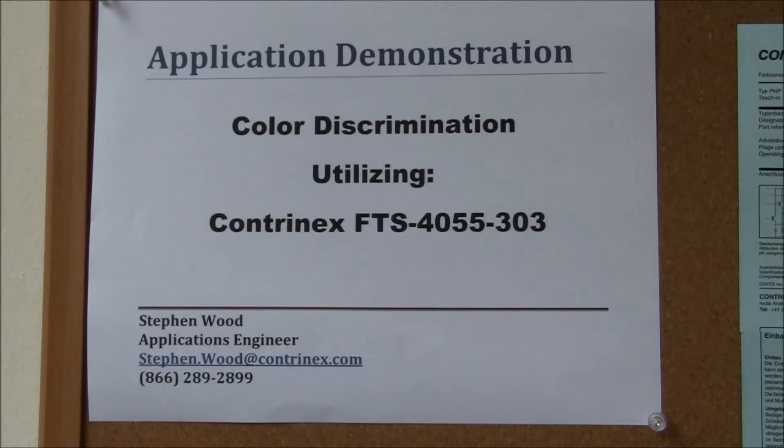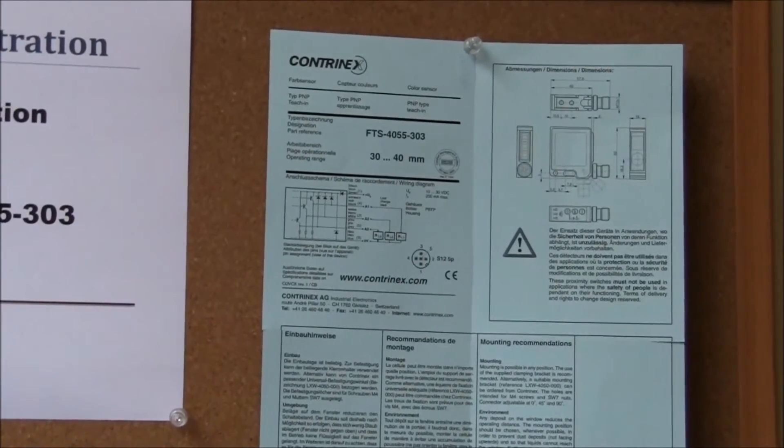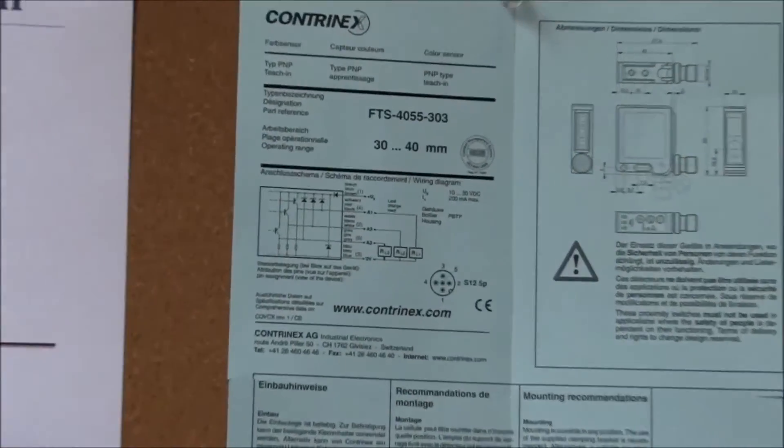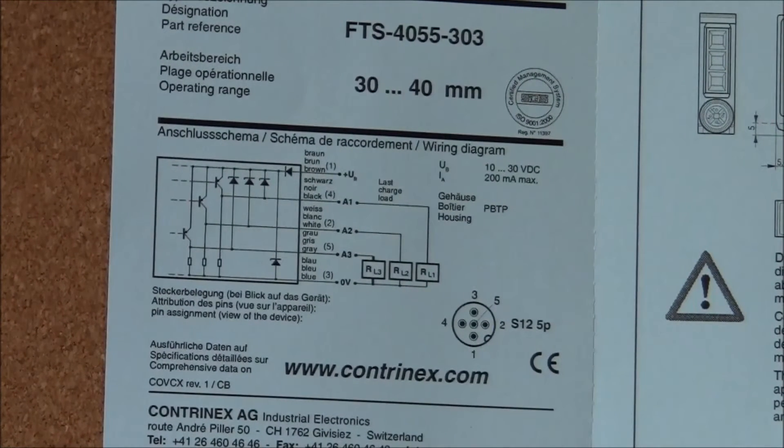When you get the Discriminator out of your package, it comes with a datasheet like this. And you'll notice right up front it tells you it has a sensing distance of 30 to 40 millimeters.